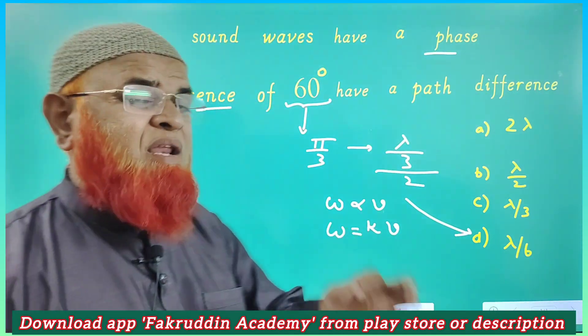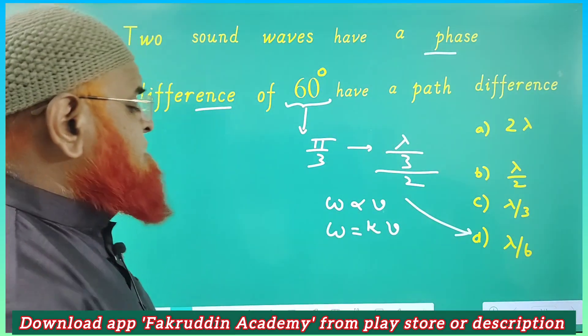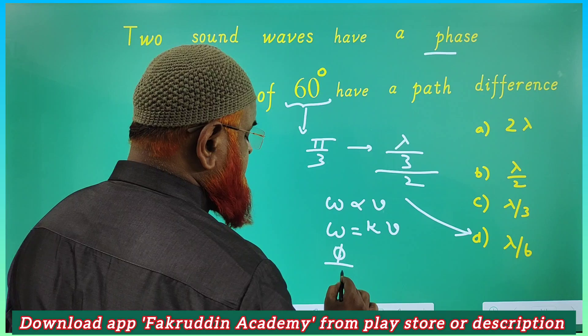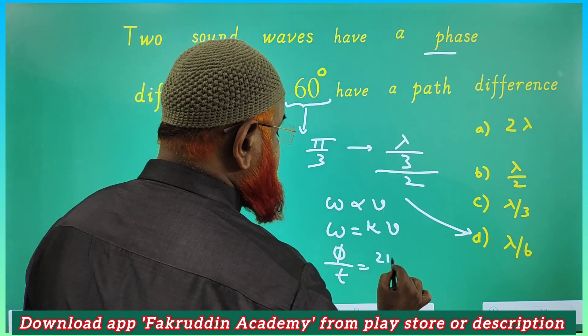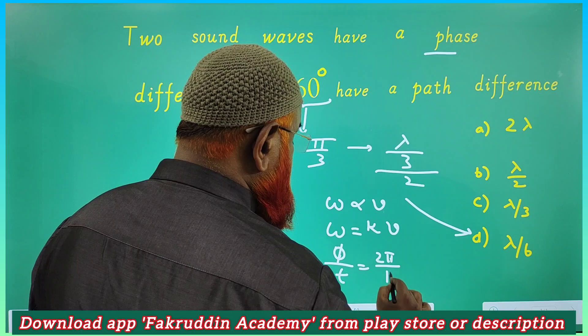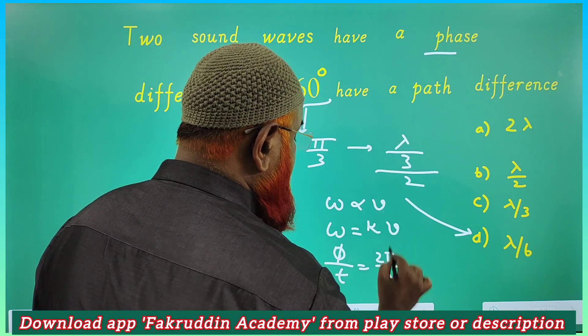Then what is omega? Omega is nothing but angular displacement by time, and k is nothing but 2π by capital lambda. 2π by λ - velocity is nothing but displacement by time here.